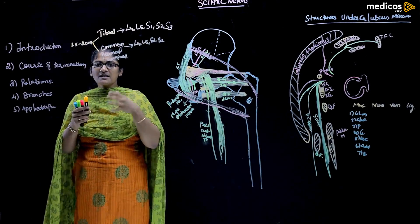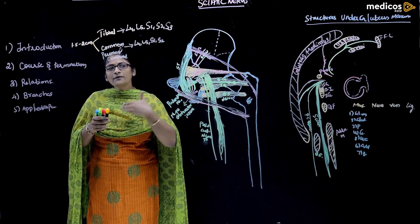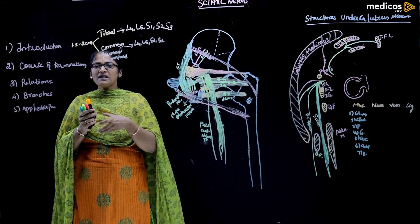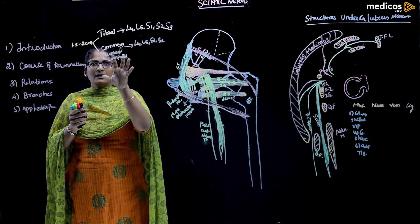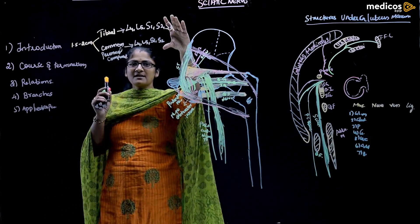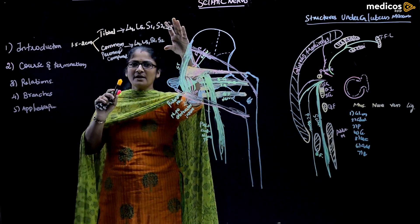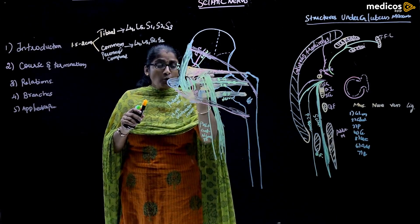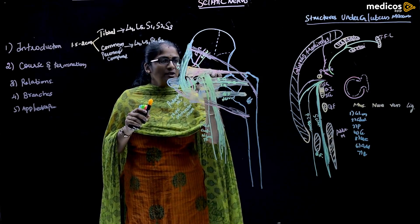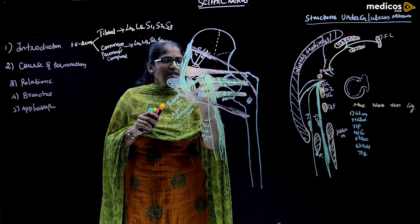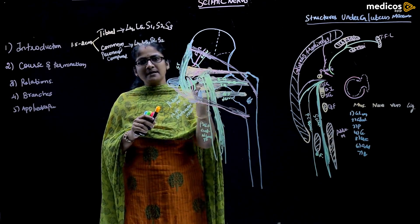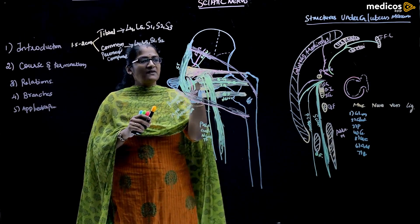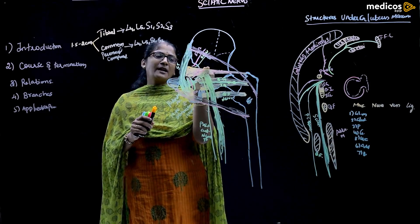The sciatic nerve is formed in the pelvis, in front of the piriformis muscle. The piriformis originates from the middle three pieces of sacrum — S2, S3, S4. The nerve comes out of the pelvis by passing through the greater sciatic foramen, mainly from the inferior border of the piriformis, but this is always variable. Keep in mind it is not always from the inferior border.